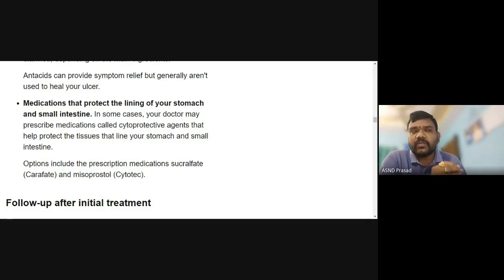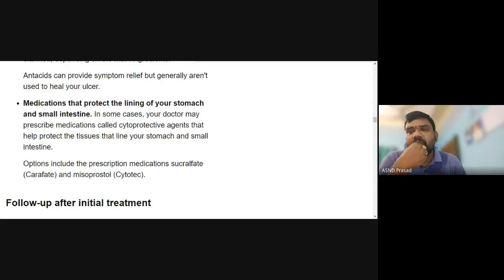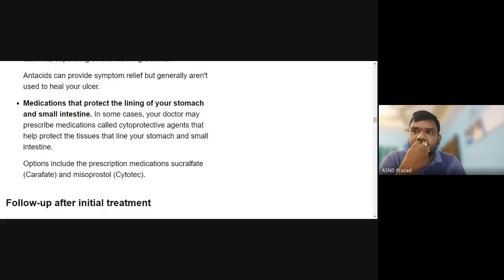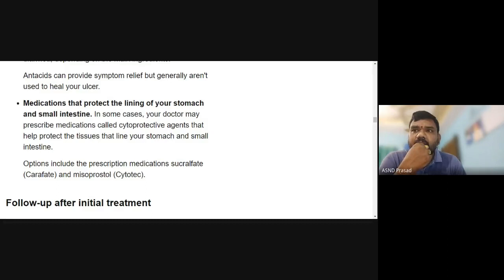Cytoprotective agents protect the mucosal lining. To summarize the treatment, a real example prescription includes amoxicillin 500 mg three times daily, erythromycin 500 mg three times daily, and pantoprazole — all prescribed together as part of the peptic ulcer treatment regimen.